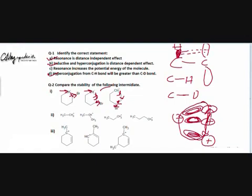As we have seen in option B of the first question, inductive effect is distance dependent, and we can really see that here. So the stability order for part one is: the intermediate in option A is most stable, followed by B, followed by C. This is the stability order of the intermediates shown in the first part of question number 2.